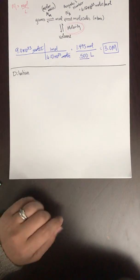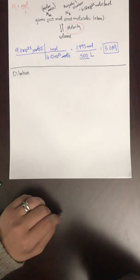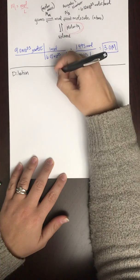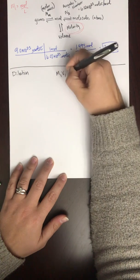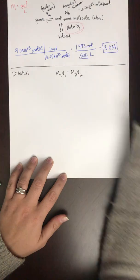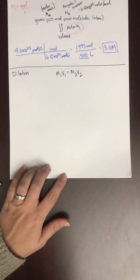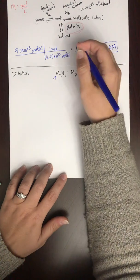So the concentration, the formula that we're going to use to dilute this concentration is going to be this: M1V1 equals M2V2. So I'm going to go through what each of these pieces stands for.